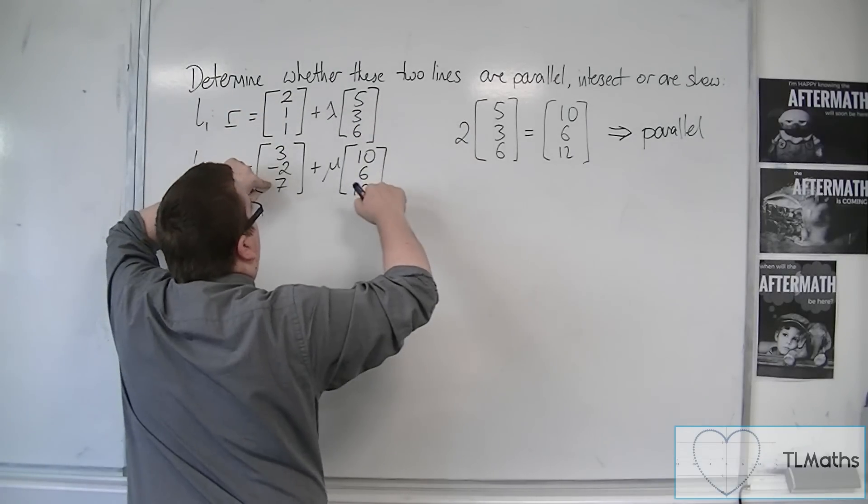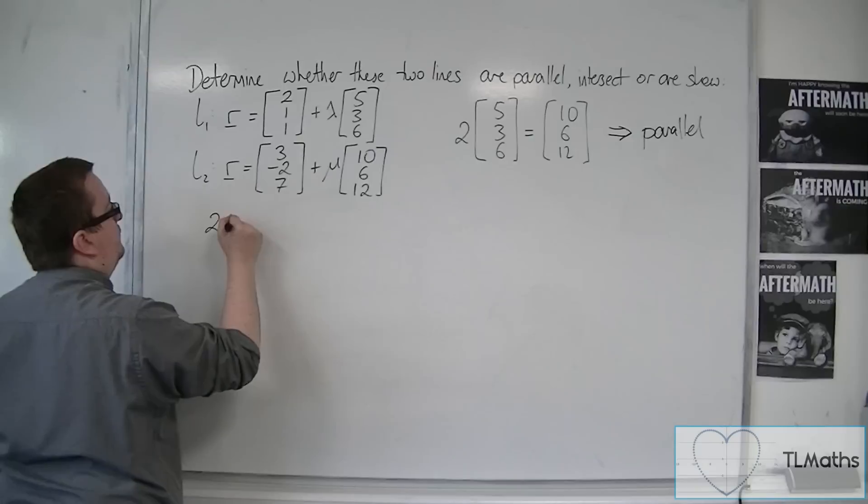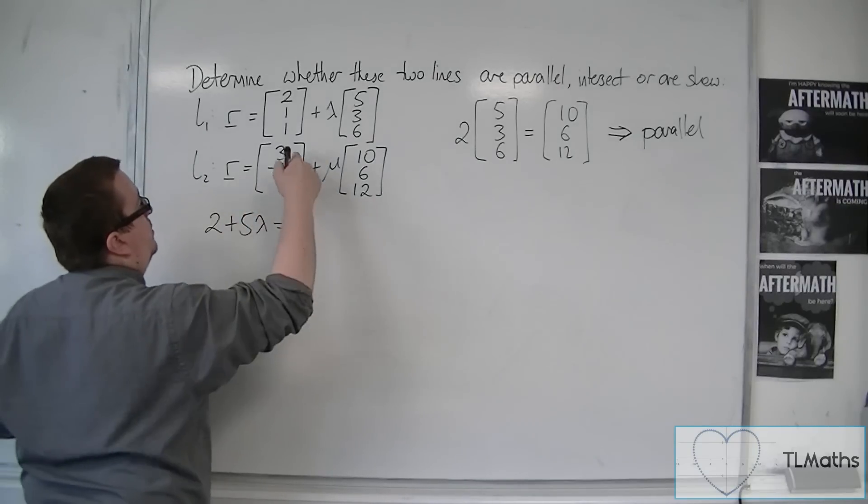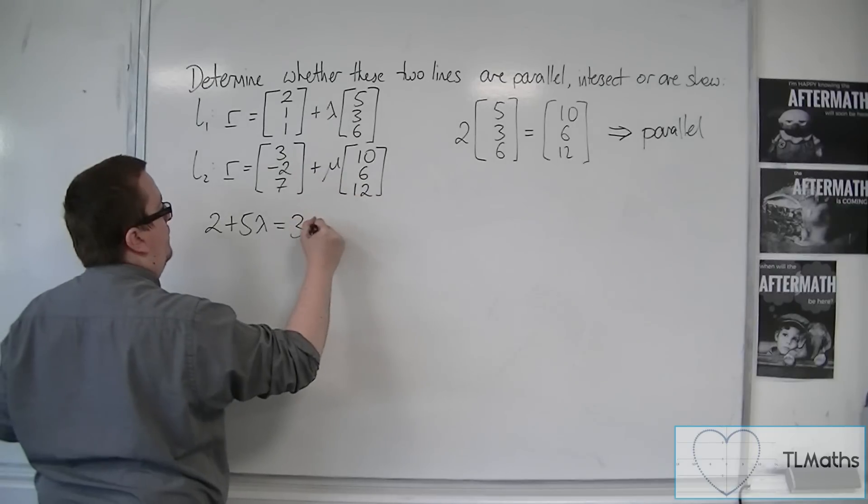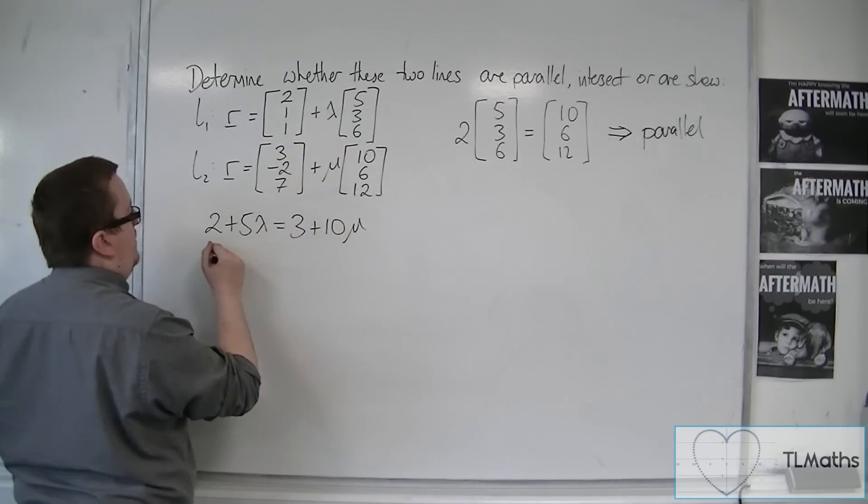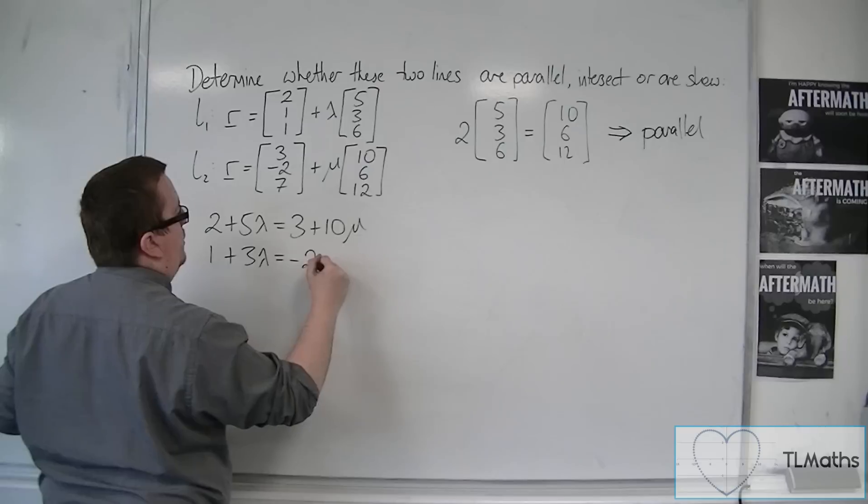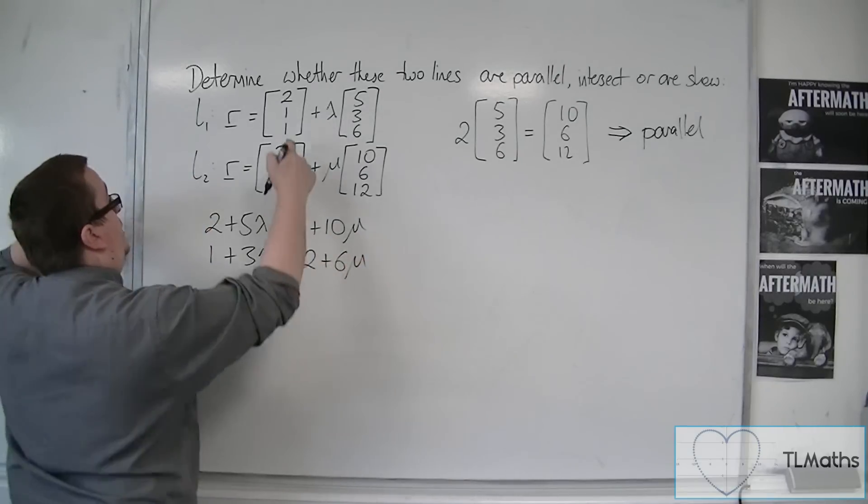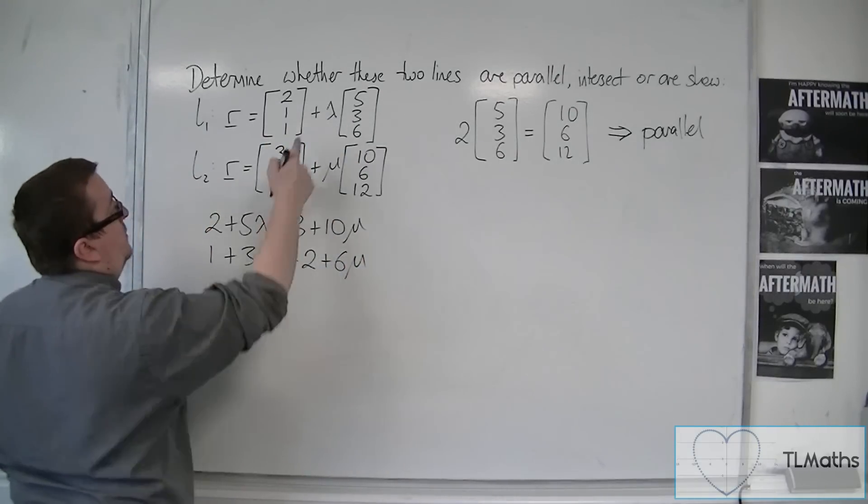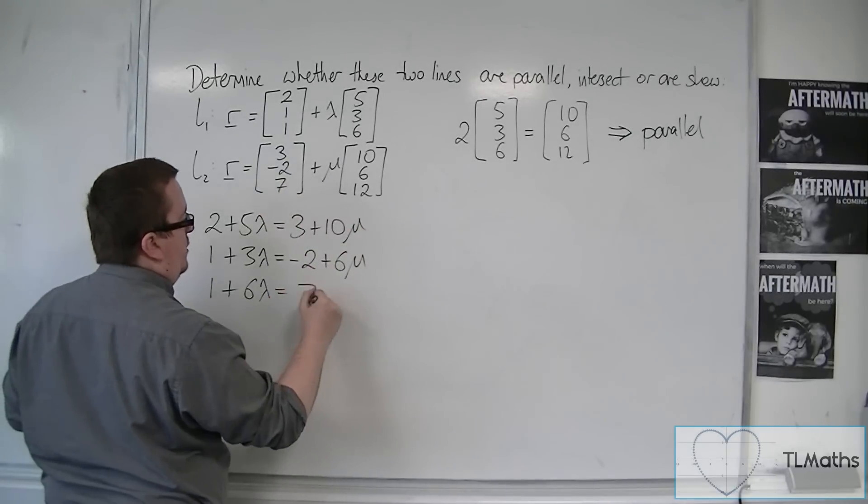So we've got 2 plus 5 lambda is equal to 3 plus 10 mu. We've got 1 plus 3 lambda for the middle row is equal to minus 2 plus 6 mu. And you've got 1 plus 6 lambda is equal to 7 plus 12 mu.